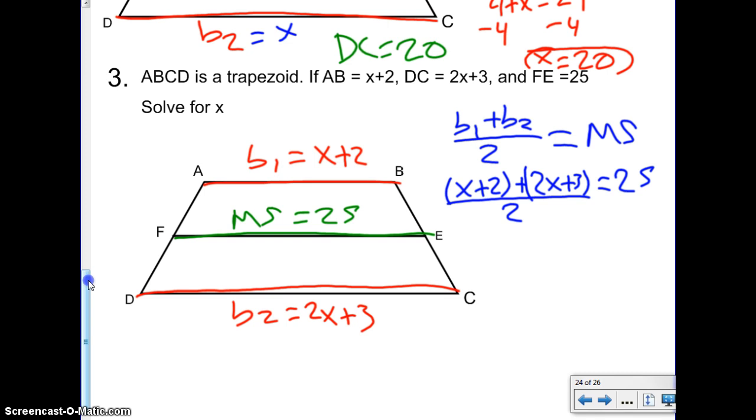Alright. So, we've got to combine our terms up top. So, we have an X and 2X. So, that's 3X. A 2 and a 3, that's 5. But we still have that nasty 2 on the bottom. Well, what do we do? You guessed it. We multiply both sides by 2 to get rid of that fraction. These 2's go away. You get 3X plus 5 equals 50.